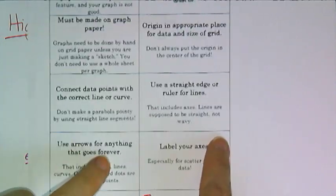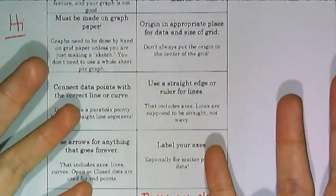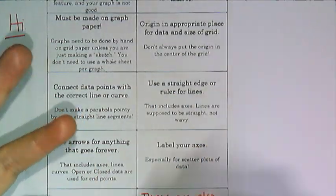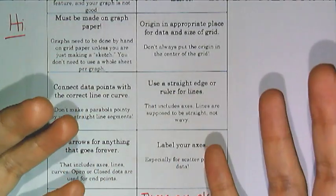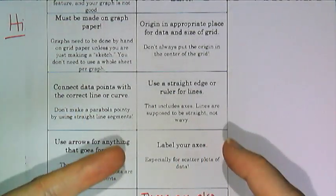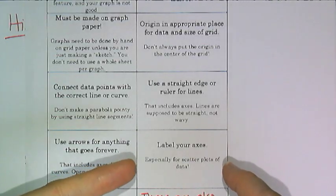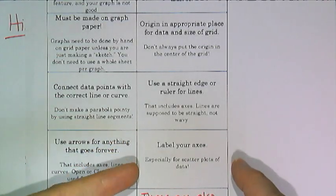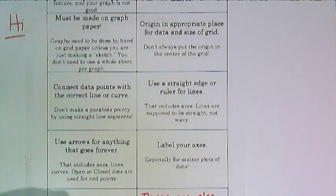Label your axes. And when I mean label your axes, I mean put an x and put a y there. This is especially critical for scatter plots — graphs of data. So if I'm doing an experiment and my x-axis is time in seconds, I need to label that as time in seconds, just like you do in science.